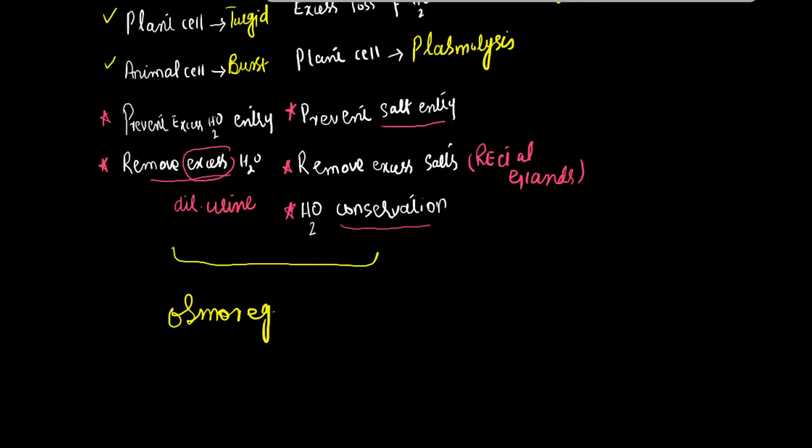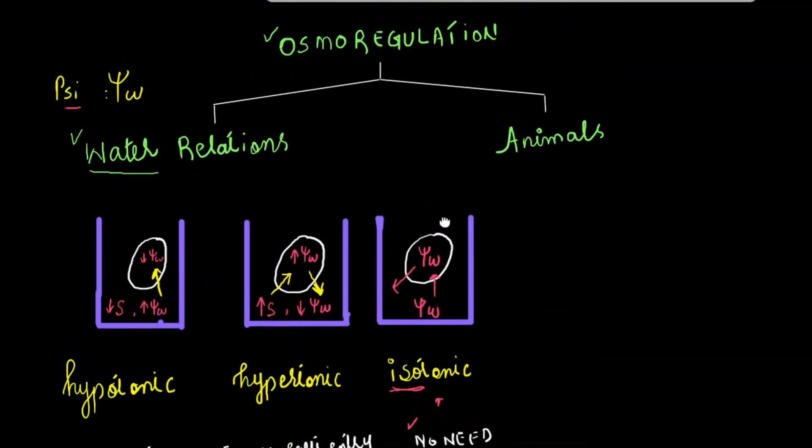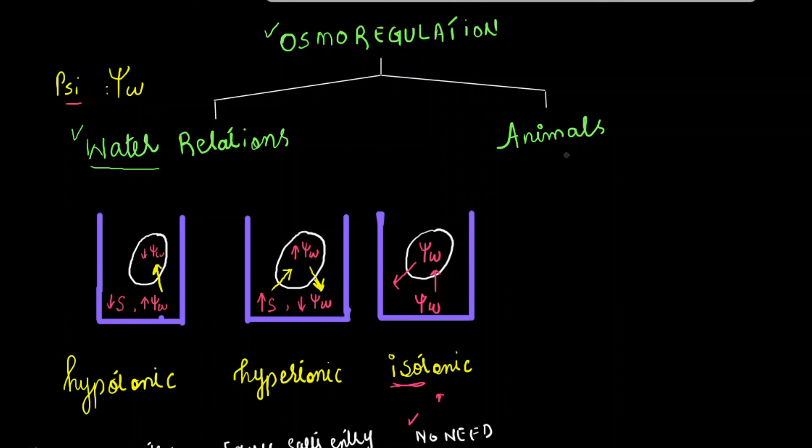So it means animals have two categories: osmoregulators and osmoconformers. This is how we classify animals. First we have animals which are referred as osmoregulators, and the second group is called osmoconformers. Osmoconformers are mostly invertebrates. There is only one vertebrate example, the most primitive vertebrate called hagfish.